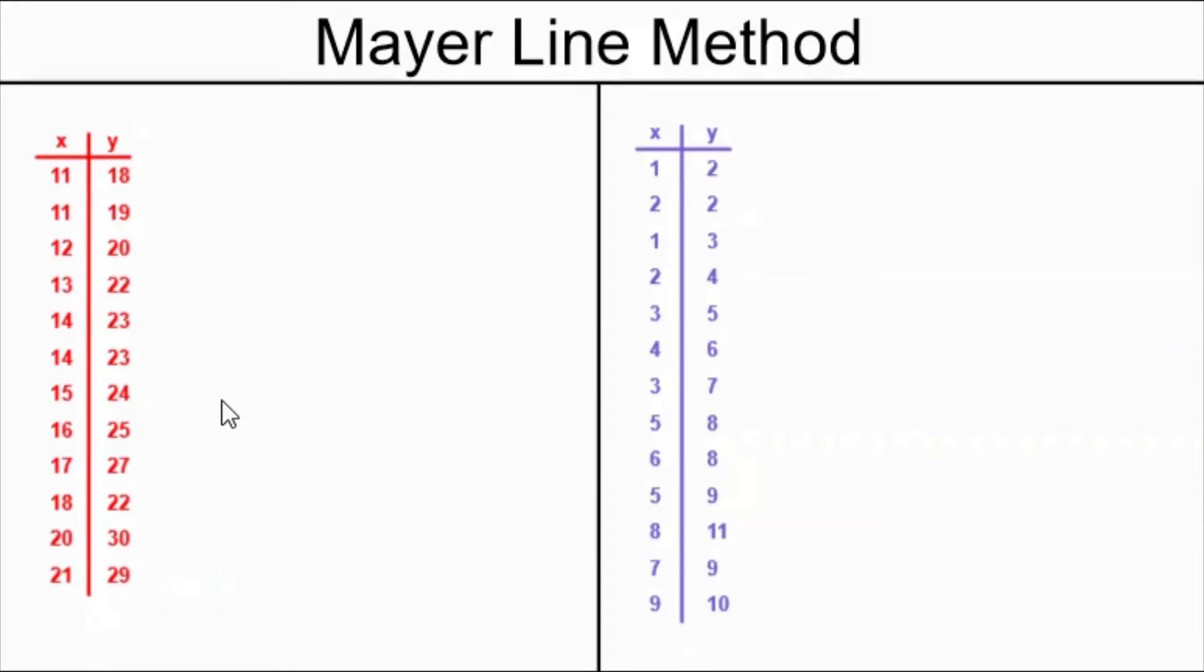The first trick that you have to know is that the x values in your table of values at the beginning of the process have to be in increasing order. My red example here has x values that are already in increasing order. This is very convenient.